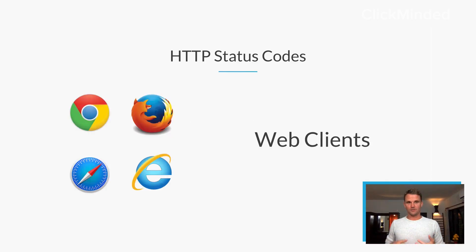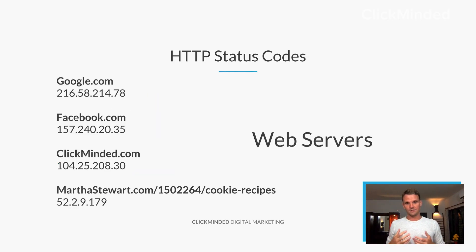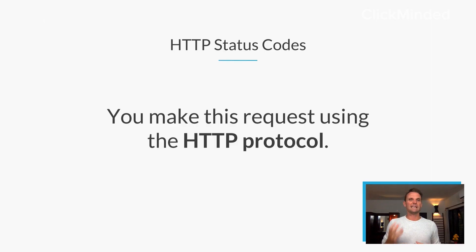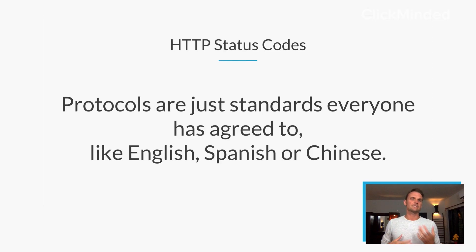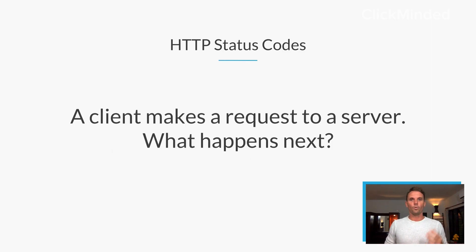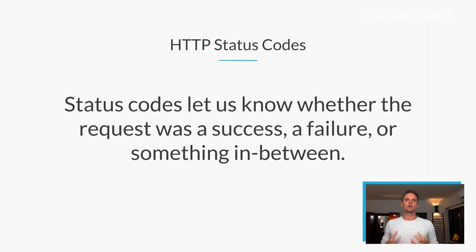You have clients — web clients — that's your browser. Maybe it's Chrome, maybe it's Firefox, maybe it's Safari, or maybe it's Internet Explorer. You're usually accessing the internet through one of these clients. Whenever you request a website, you're making a request from a web server. You make a request, and the server responds. That's happening every single time you're clicking a link. You make this request using what we call the HTTP protocol. Protocols are really just standards that everyone on the internet has agreed to — no different than English, Spanish, or Chinese. It's a language we've all agreed to. A client makes a request to the server — what happens next? Status codes let us know whether the request was a success, a failure, or something in between. That's what an HTTP status code is.